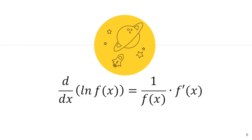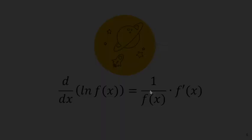This leads to a very important general formula. If we are differentiating ln(f(x)) — where the argument is not just x but any function — the derivative is (1/f(x)) · f'(x), which is essentially the chain rule applied to the natural logarithm.